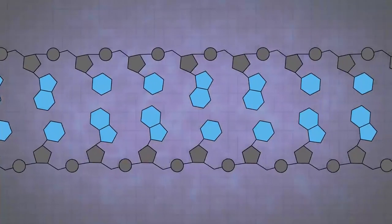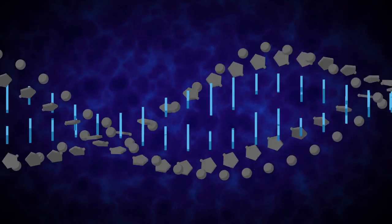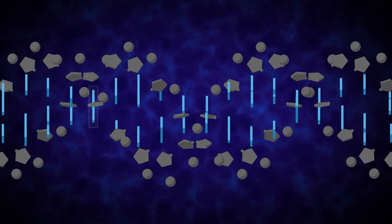The double helix structure of DNA is highly regular. Each turn of the helix measures approximately 10 base pairs.